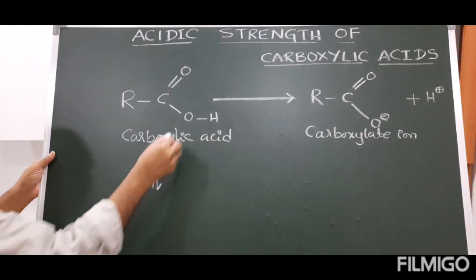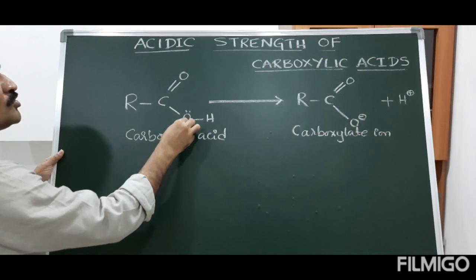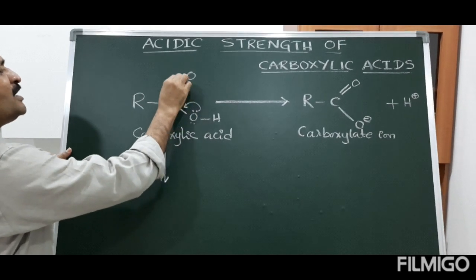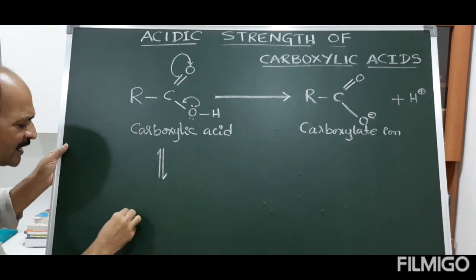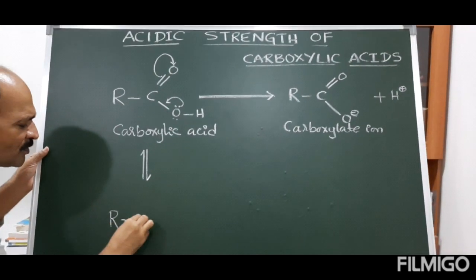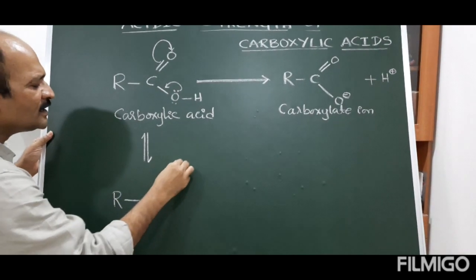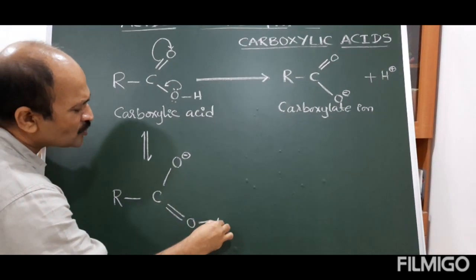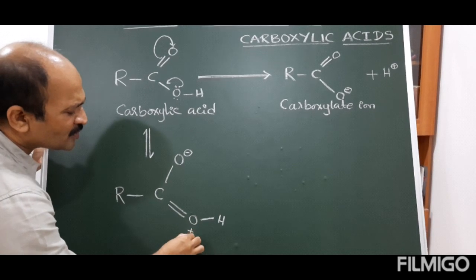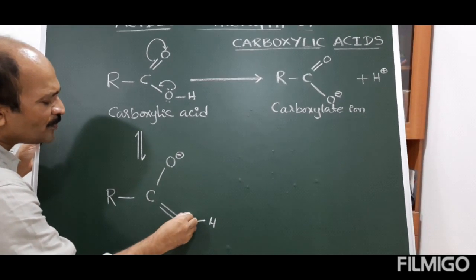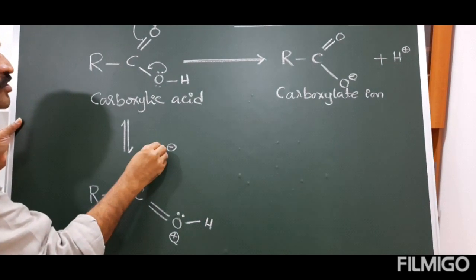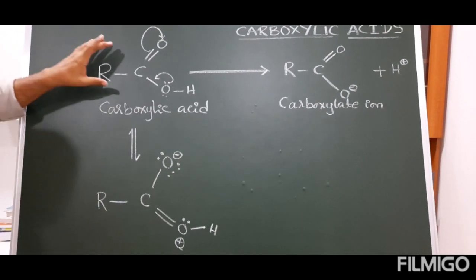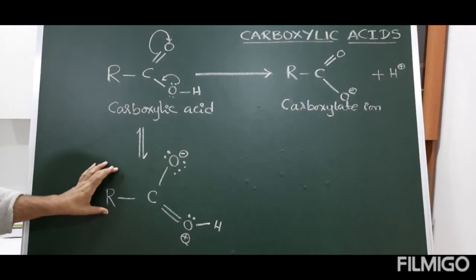The oxygen has a lone pair; as a result it forms a pi bond, and the electron density shifts, giving a resonating structure of carboxylic acid with O⁻ and a double bond O, with a positive charge here and lone pairs on the oxygen atoms.